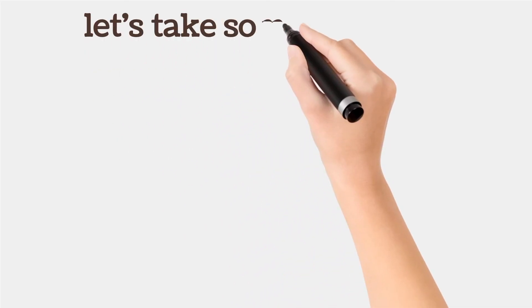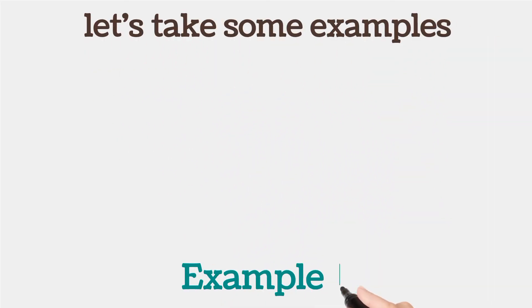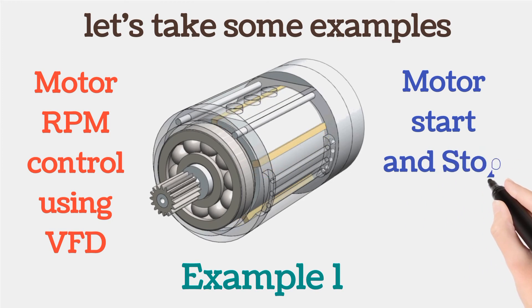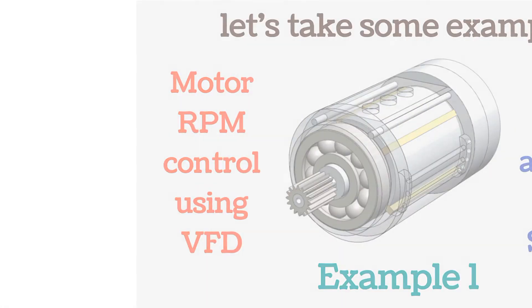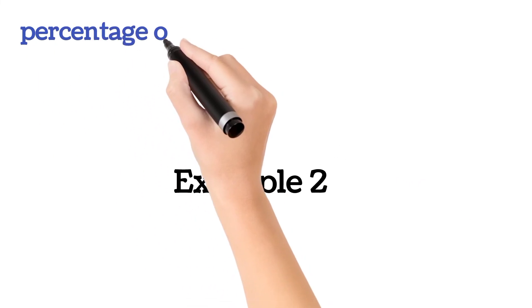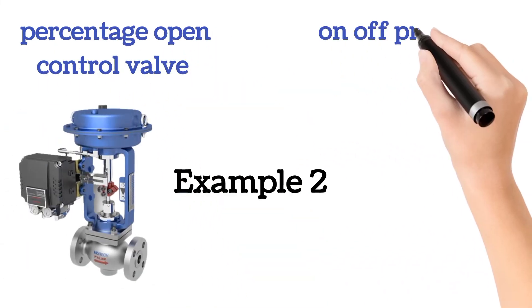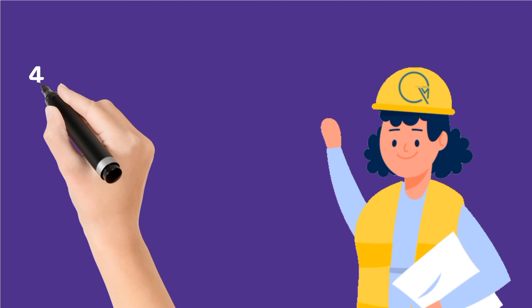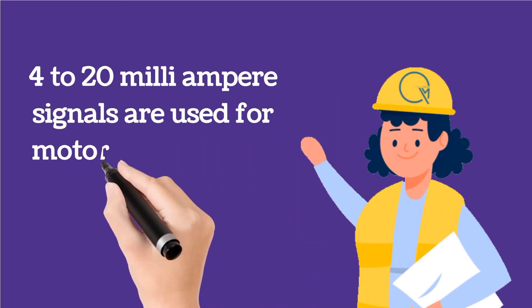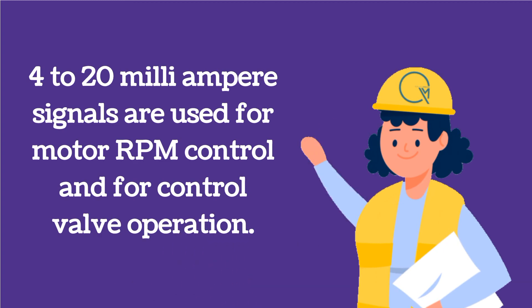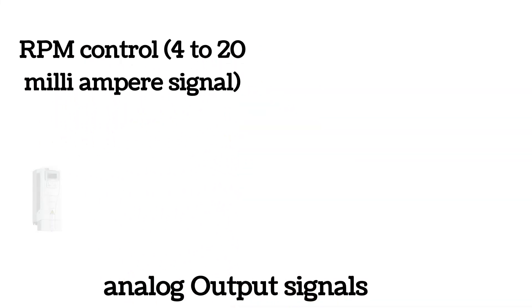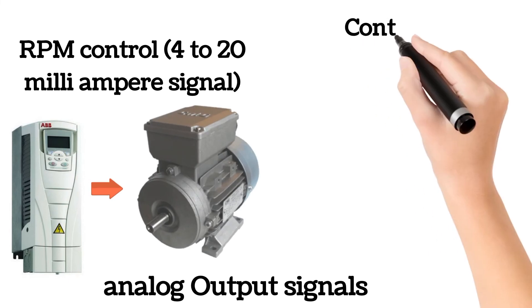For better understanding, here are two examples. The first example is motor RPM control using a VFD and motor start/stop from SCADA. The second example is percentage-open control of a control valve and ON/OFF control of a pneumatic control valve. The 4–20 mA signals used for motor RPM control and control valve operation are analog output signals, as they are controlling signals that vary under the 4–20 mA range.